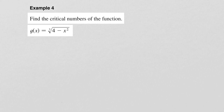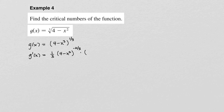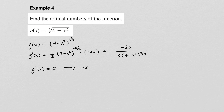In the last two examples, we just want to find critical numbers. Here we have g of x equals the cube root of 4 minus x squared, rewritten as (4 minus x squared) to the one third power. Using the chain rule, g prime of x equals negative 2x over 3 times (4 minus x squared) to the two thirds power. To find critical numbers, the derivative equals zero only when the numerator is zero, so negative 2x equals zero, giving x equals 0.